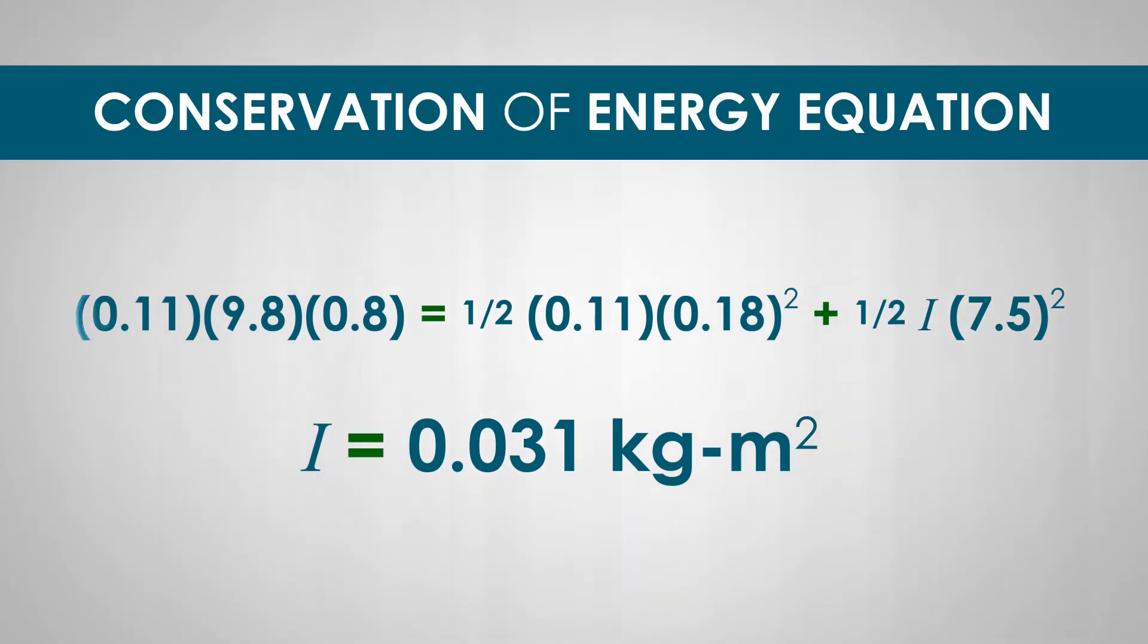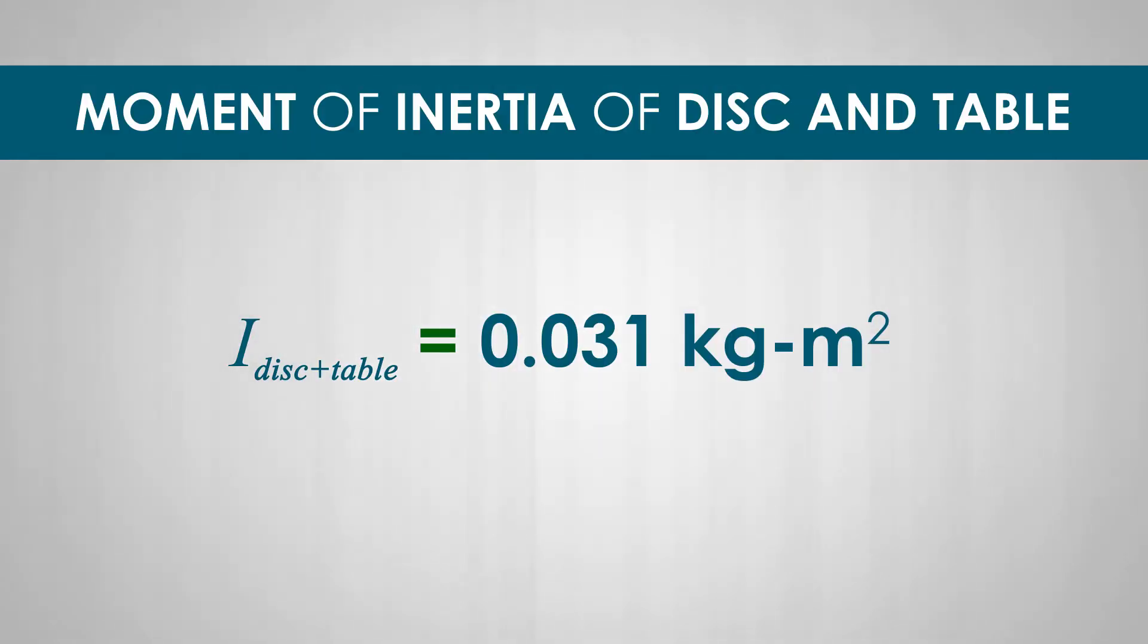Using these numbers and using our conservation of energy equation, we solve for the moment of inertia and we get I equals 0.031 kilogram meters squared. But remember, this is the moment of inertia of the disk and the rotary table together since both were turning.